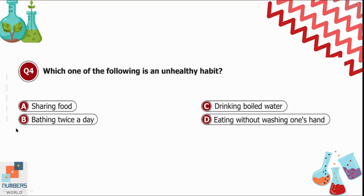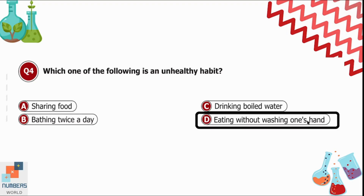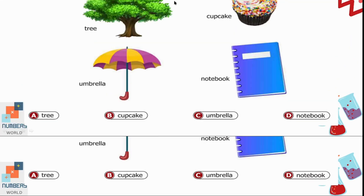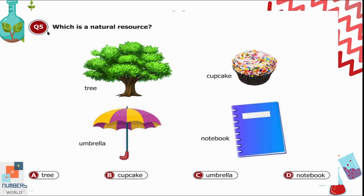Question 4: Which one of the following is an unhealthy habit? Option A is sharing food. Option B is bathing twice a day. Option C is drinking boiled water. Option D is eating without washing one's hands. Obviously, eating without washing hands is the most unhealthy habit, which can make us sick.